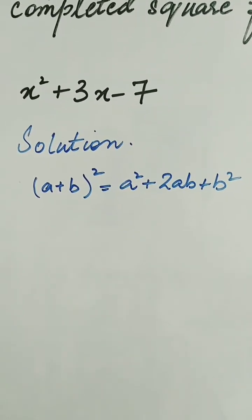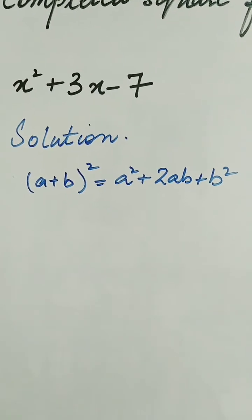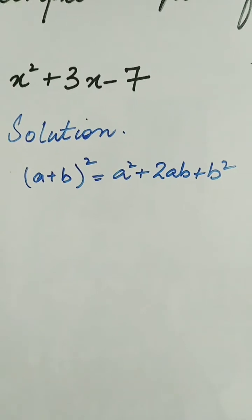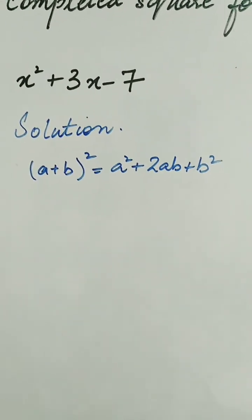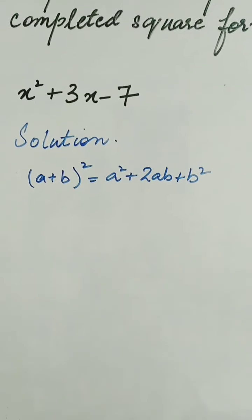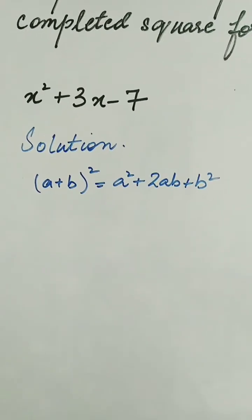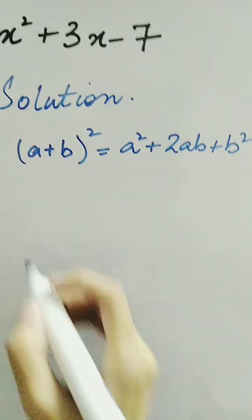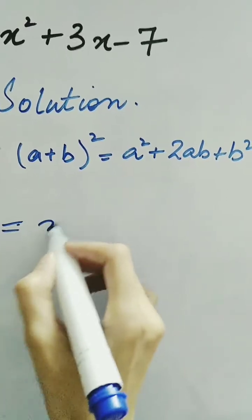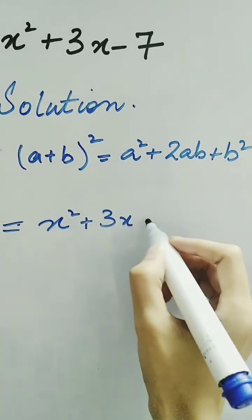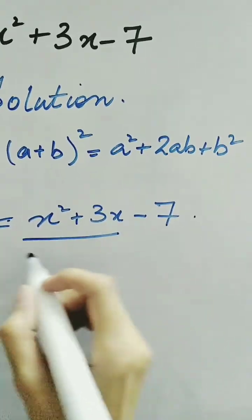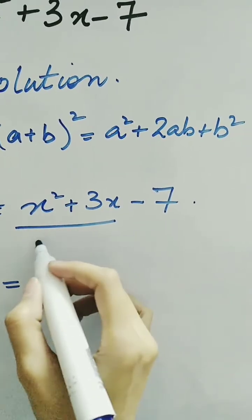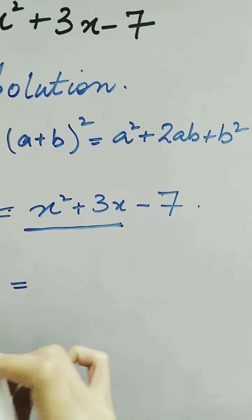Now look at another question: x squared plus 3x minus 7. As there is a positive sign between x squared and 3x, we use the formula a plus b whole square, which is equal to a squared plus 2ab plus b squared, in order to convert this expression into a complete square form. We use only the terms that involve x squared and x in order to convert them into a formula.